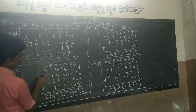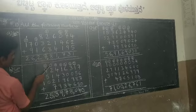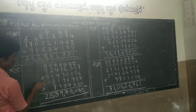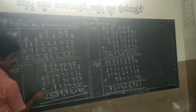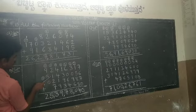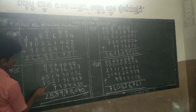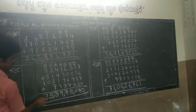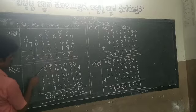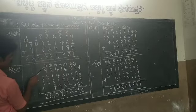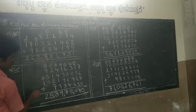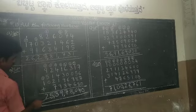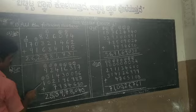In the ten-lakhs place with carry 1: 1 plus 2 is 3, 3 plus 1 is 4, 4 plus 2 is 6, 6 plus 7 is 13. Write 3 down and carry 1. In the crores place with carry 1: 1 plus 9 is 10, 10 plus 5 is 15, 15 plus 0 is 15. Write 5 down and carry 1. In the ten-crores place: 1 plus 1 is 2. Write 2.